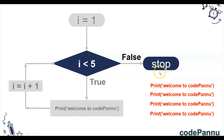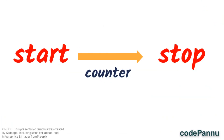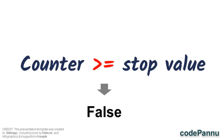This is how 'Welcome to Codepand' was printed 4 times. This variable i can also be called a counter. The counter starts with the start value and keeps increasing. Sometimes it can even be decreasing, but it goes from the start value toward the stop value. When the counter value becomes equal to or higher than the stop value, the less-than condition becomes false, and Python stops running the loop.